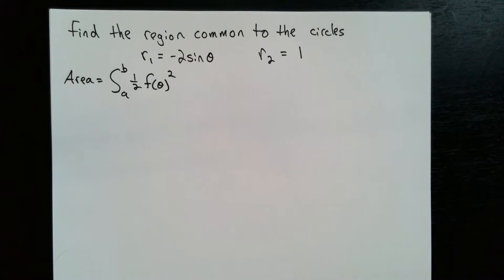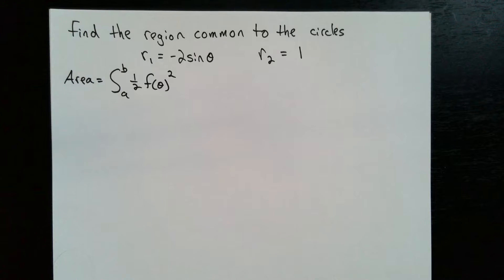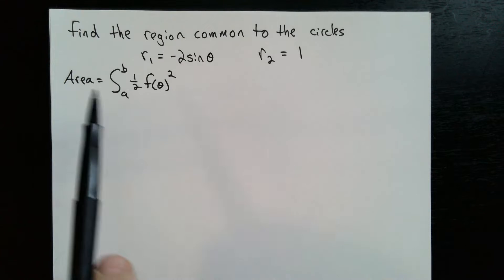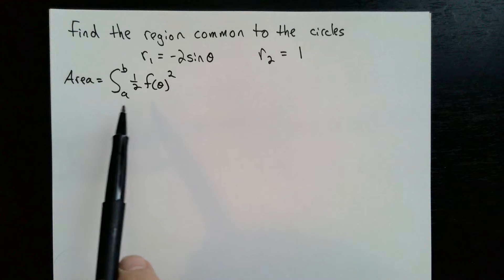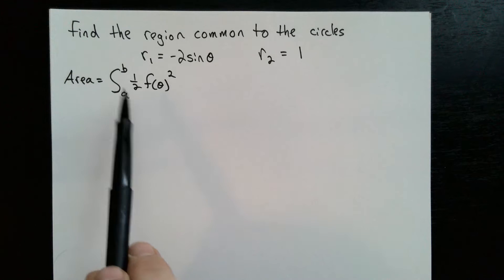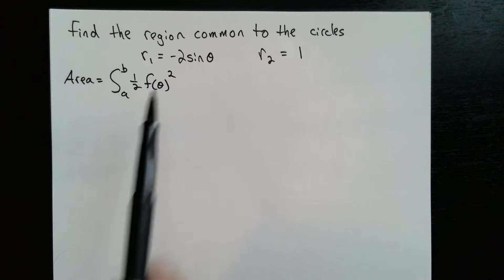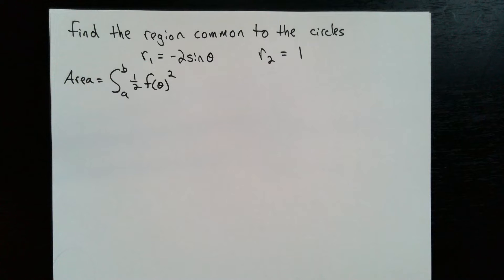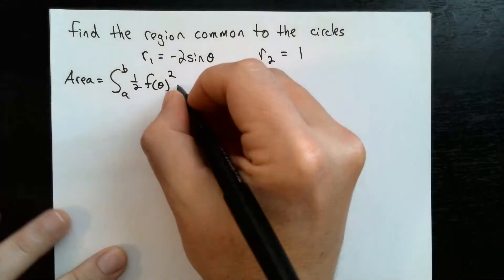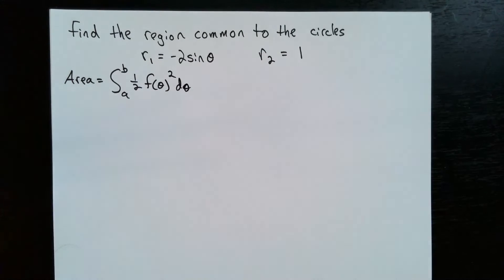In this video, we're going to find the region common to the two circles: r1 is equal to negative 2 sine theta, and r2 is equal to 1. We're going to use the formula: area is equal to the integral from a to b of one half f of theta squared d theta to find the area.